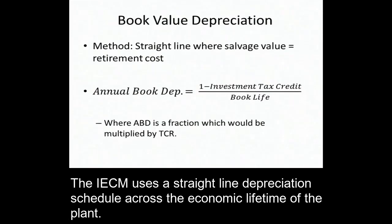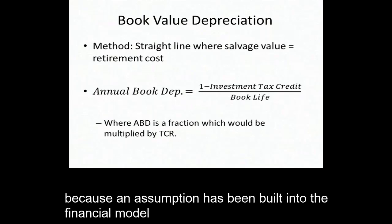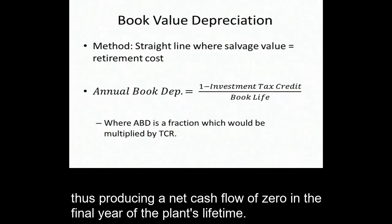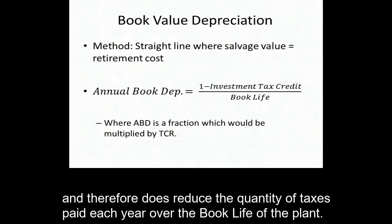The IECM uses a straight line depreciation schedule across the economic lifetime of the plant. No parameter is explicitly dedicated to depreciation because an assumption has been built into the financial model whereby the salvage value of the plant is equal to the decommissioning costs, thus producing a net cash flow of zero in the final year of the plant's lifetime. The annual depreciation of the plant is considered a negative annual cash flow and therefore does reduce the quantity of taxes paid each year over the book life of the plant.